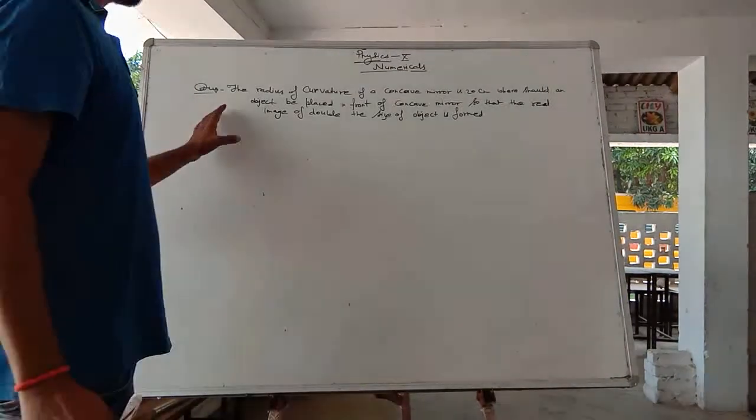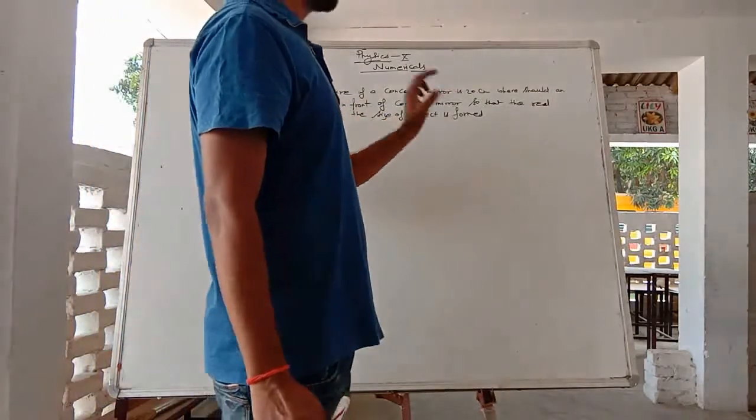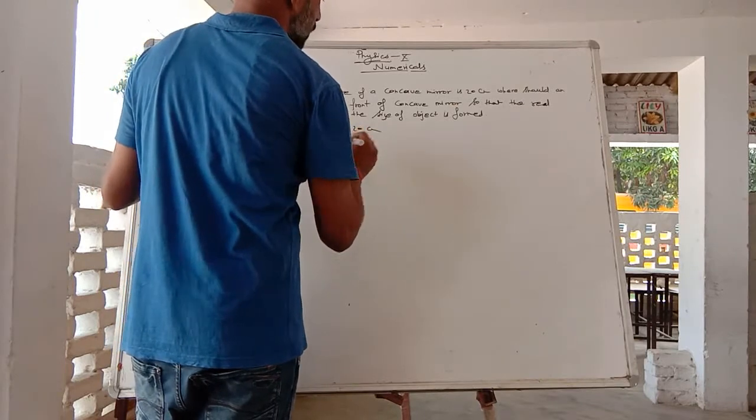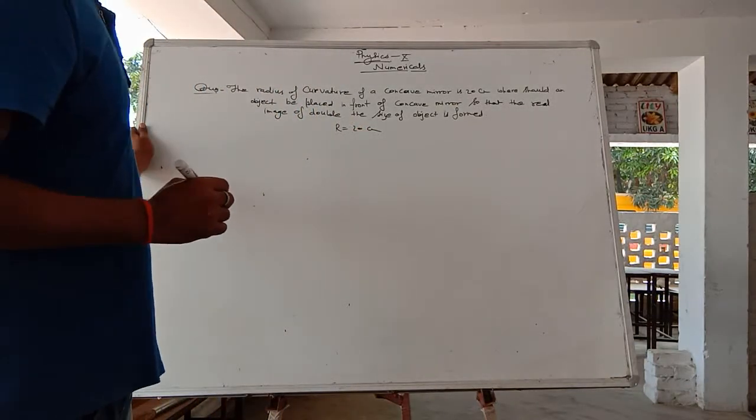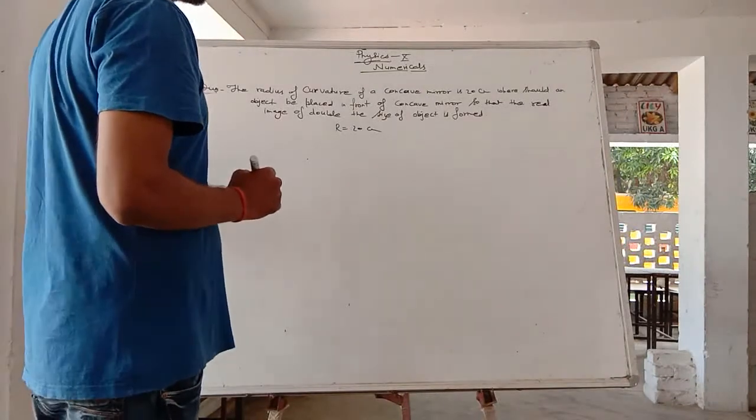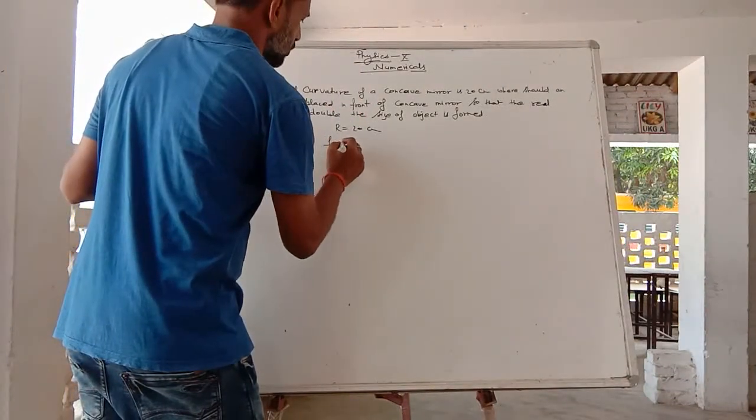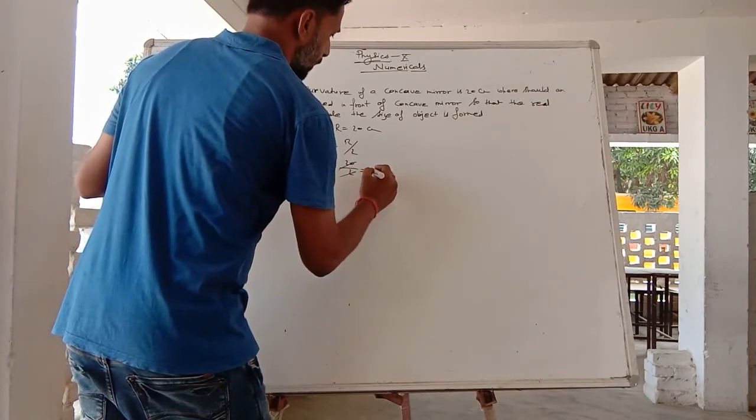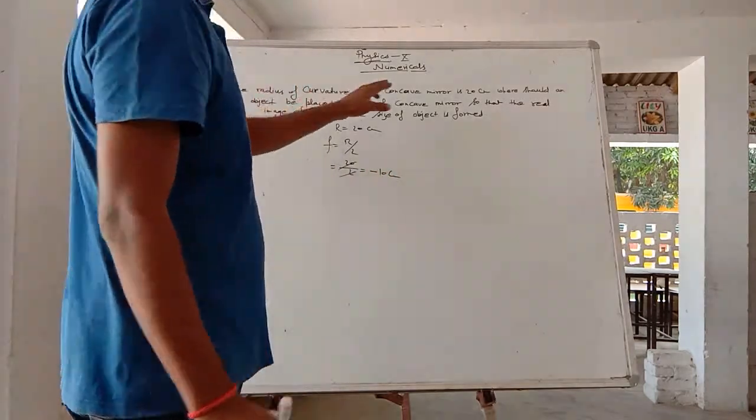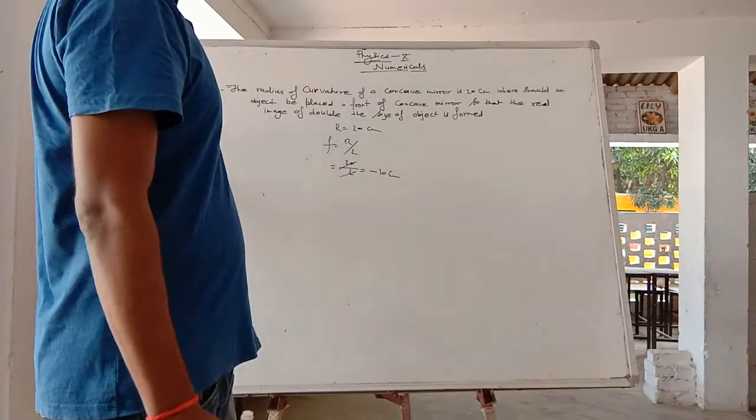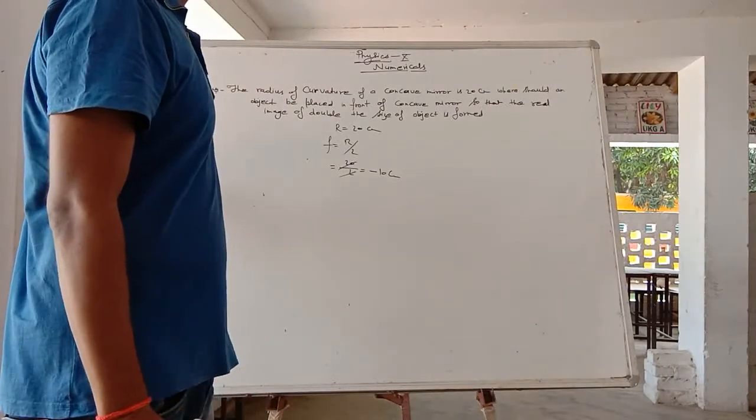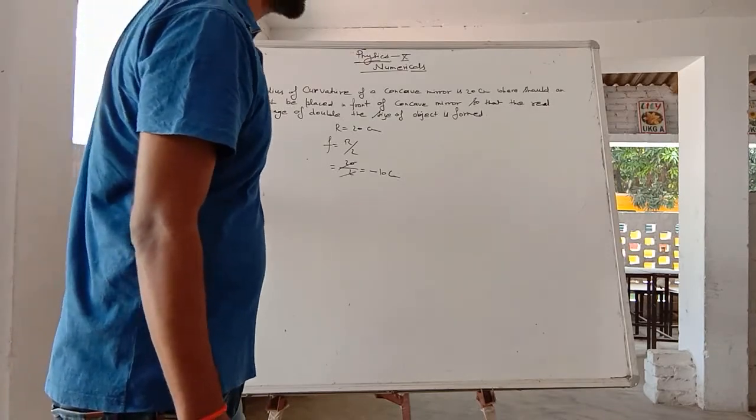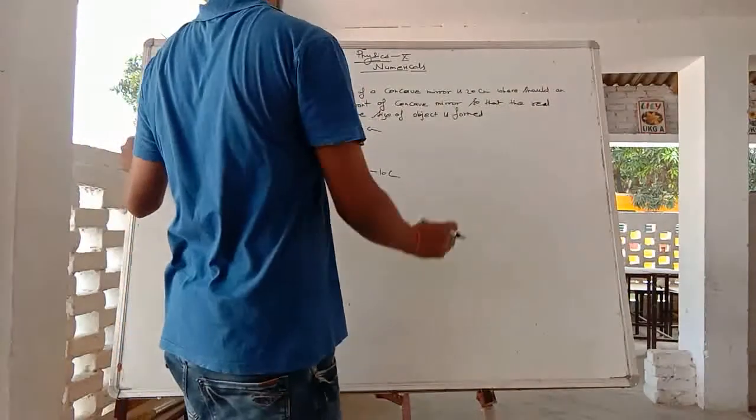See this question. The radius of curvature of a concave mirror is 20 cm. So r value is 20 cm, from which we can easily find focal length f. f is equal to r upon 2, so it becomes 20 upon 2, which gives minus 10 cm. Minus 10 because it's a concave mirror. In concave mirror, u, v, and f - these three values will be negative.